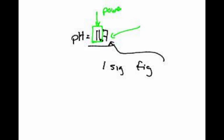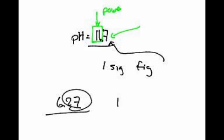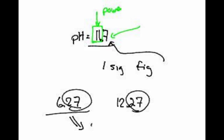The sig figs — you only count numbers past the decimal. So if I've got a pH of 6.27, that's got two sig figs. And if I have 12.27, that's also considered two sig figs, because you only count the decimals past. So if we want to calculate the concentration from 6.27, I go 10 to the negative 6.27.